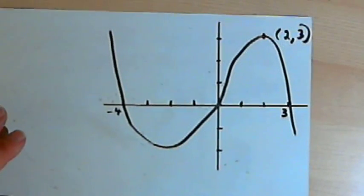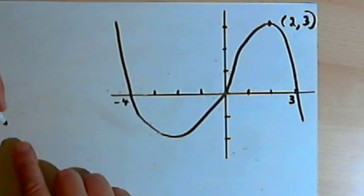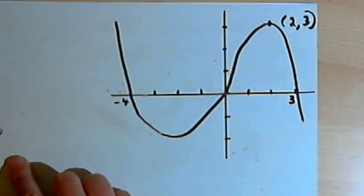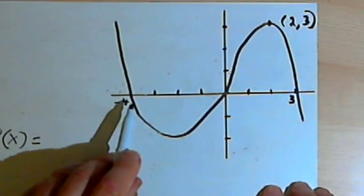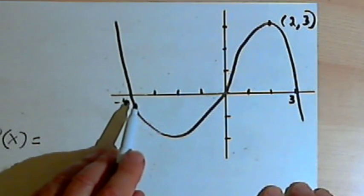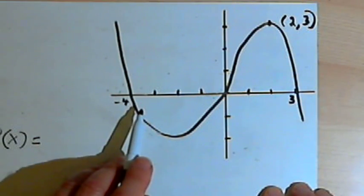So let's start with this graph. Let's say that the function we want to find is p of x. And let's use the graph to find out what the factors of that polynomial are going to be.